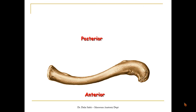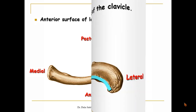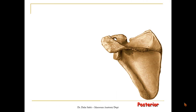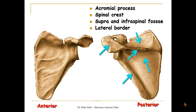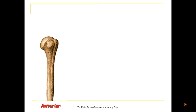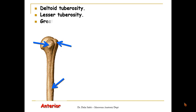This is a superior view of the left clavicle showing its anterior surface, posterior surface, medial end, and lateral end. This line represents the anterior surface of the lateral third of the clavicle. This is the posterior surface of the left scapula showing the acromion process, the spinal crest, the supraspinous and infraspinous fossae, and the lateral border of the scapula. On its anterior surface we can see the subscapular fossa and the suprascapular notch.